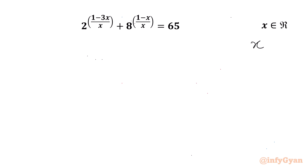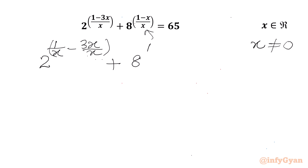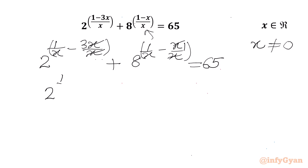Let's get started by writing x cannot be equal to 0, since the denominator cannot be 0. Now I will write our equation: 2 raised to the power (1 over x minus 3x over x) plus 8 raised to the power (1 over x minus x over x) equal to 65. The x terms cancel in the numerator and denominator, giving 1, so the equation becomes 2 raised to the power (1 over x minus 3) plus 8 raised to the power (1 over x minus 1) equal to 65.